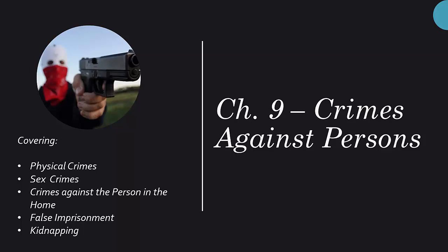This is the only slide you're going to see — this is just me talking through it. The thing to keep in mind: we're going to cover in this chapter a host of crimes. Physical crimes that include assault and battery and robbery. We're going to talk about sex crimes, crimes against a person in the home that includes various types of abuse, false imprisonment, and also kidnapping.